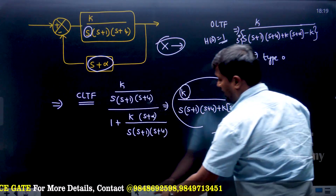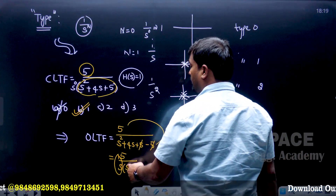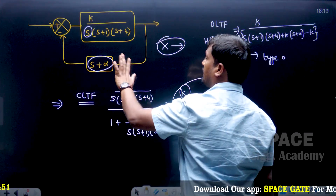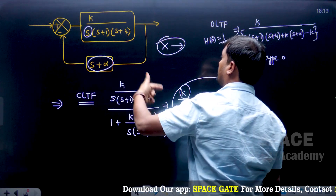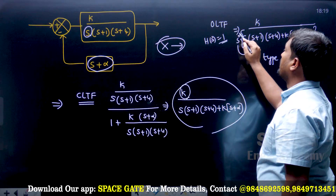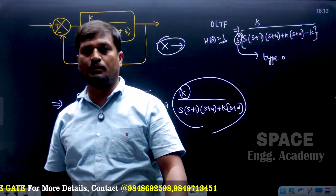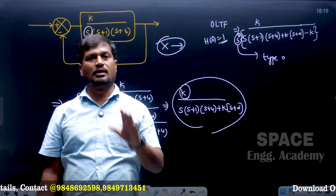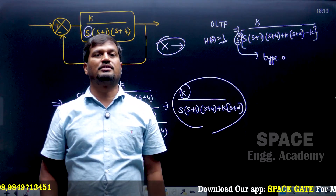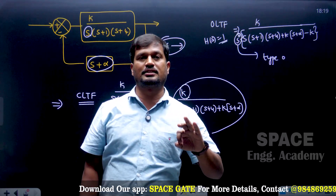To summarize: for unity feedback, you can directly count the number of integrators in the open-loop transfer function to decide the type. But for non-unity feedback, do not decide directly. First convert non-unity feedback into unity feedback, then determine the open-loop transfer function, and then check the common power of s in the denominator. If it is 0 — Type 0 system; if it is 1 — Type 1 system, and so on. By this procedure, there will be 100% no mistakes in any examinations. Thank you.